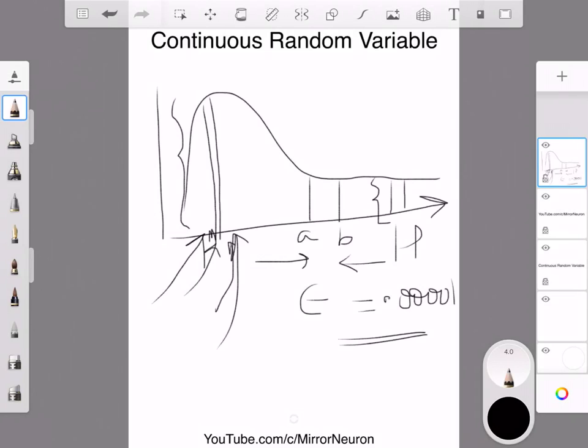So that means this function on the x-axis, whatever be the width, so a minus b in this case, times whatever be the height. Say height is, if you multiply with the small probability, say it's 0.25, so this height can be 0.25 in this particular example.